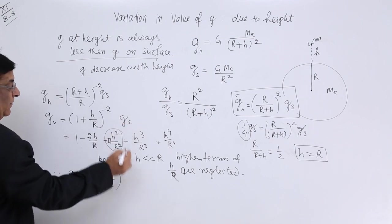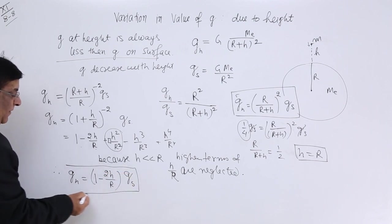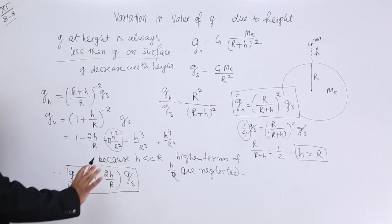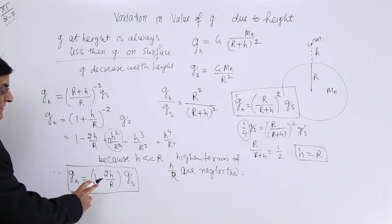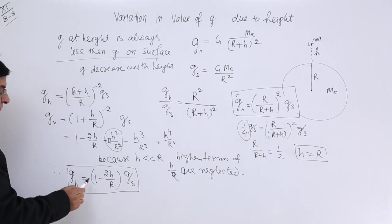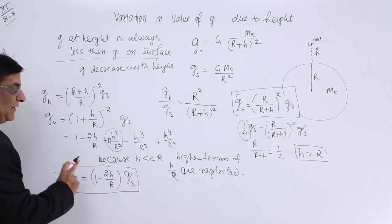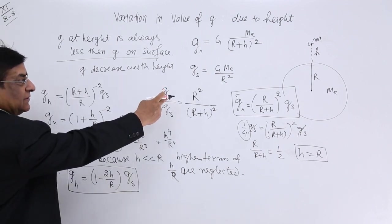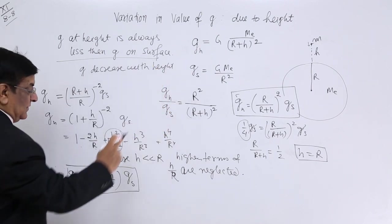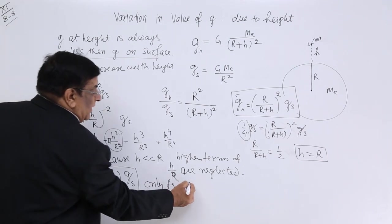This is to be multiplied with g on the surface. This becomes a very simple one. No square, nothing else. And this tells us that at height, this will decrease by this factor. When the height is increasing, then g_h is decreasing. But this formula can be applied not for this question, because here the height is very large. This can be applied only for small height.